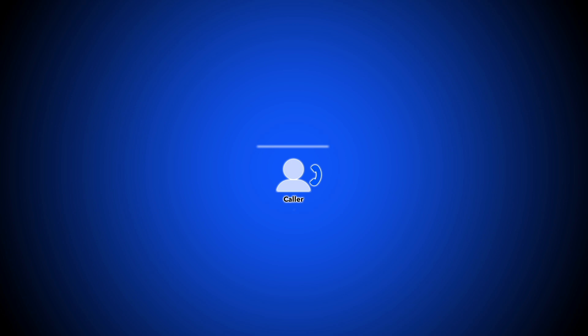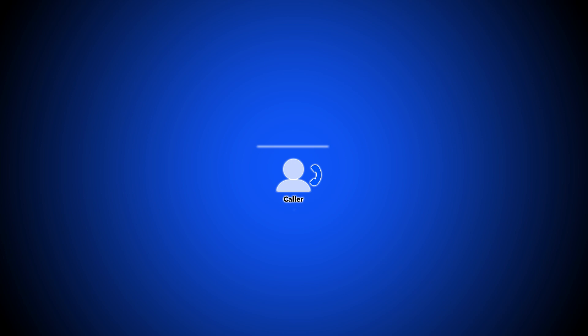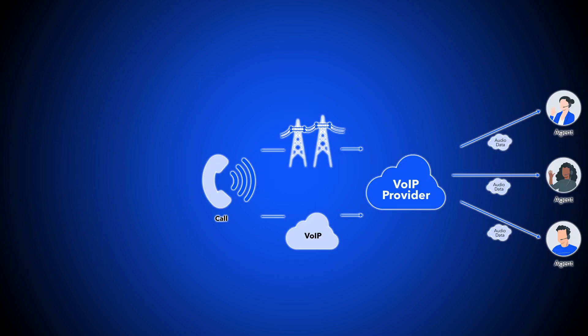When a user calls a direct inward dial number, the phone system provider routes the call directly to the associated user or phone. This call routing is achieved via either cloud-based VoIP or landline-wired PRI, or primary rate interface.